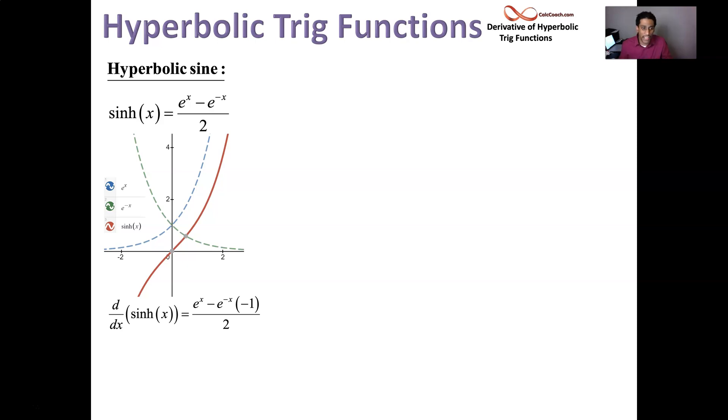So the double minuses make a plus. We end up with e to the x plus e to the negative x, all divided by 2.